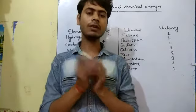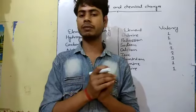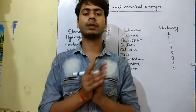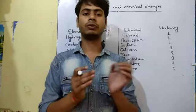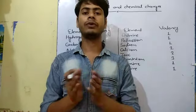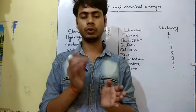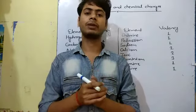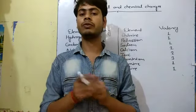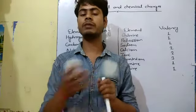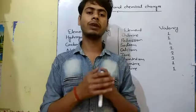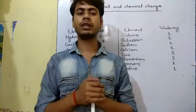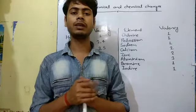We take one example which shows more than one valency — that is carbon. Carbon shows valencies of two and four. So carbon shows variable valency. Some elements show more than one valency, and that is known as variable valency.